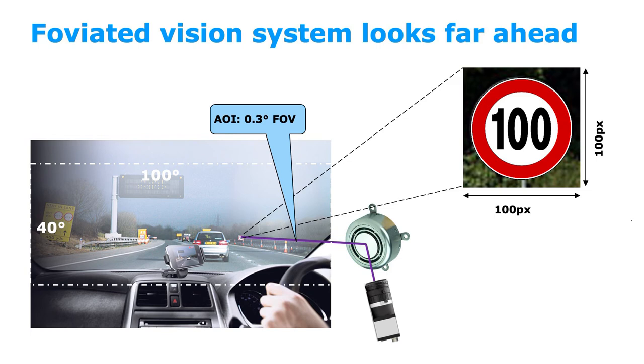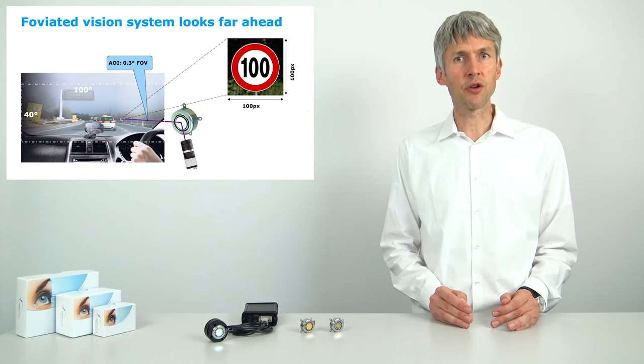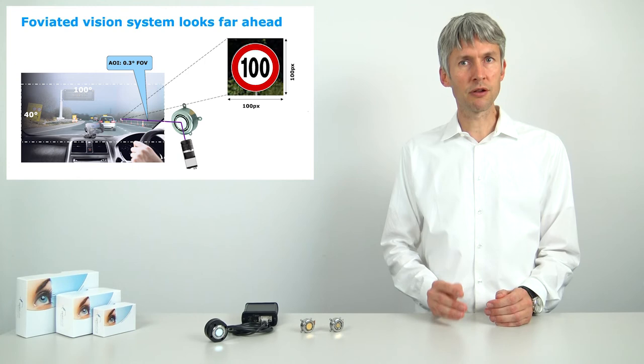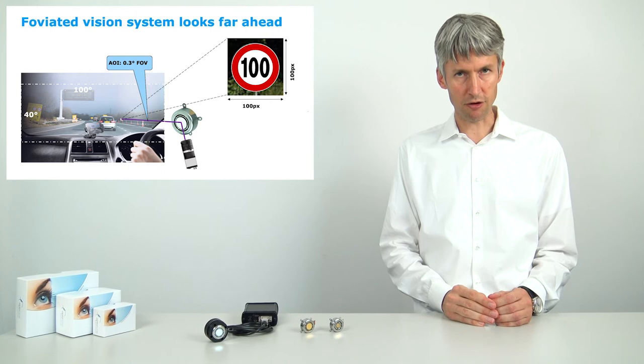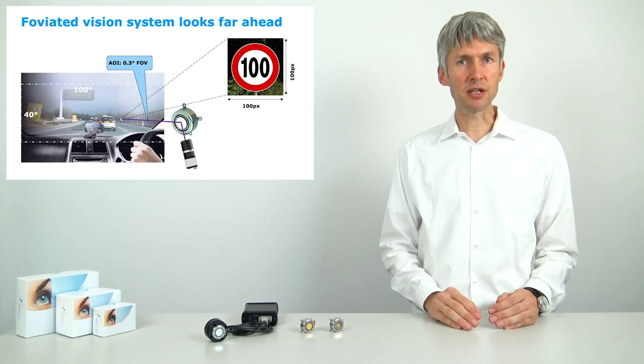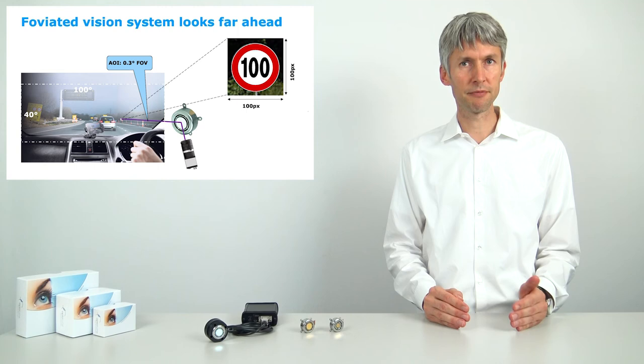Another compelling application for cars would be a foveated vision system that imitates human vision. For example, a street sign in a distance of 100 meters corresponds to 0.3 degree optical field of view. You need about the resolution of 100 pixels by 100 pixels to identify the street sign without error. If you assume that the street sign is placed anywhere within a field of view of 100 degrees by 40 degrees, you would require a 400 megapixel camera in order to do the job without our mirror.